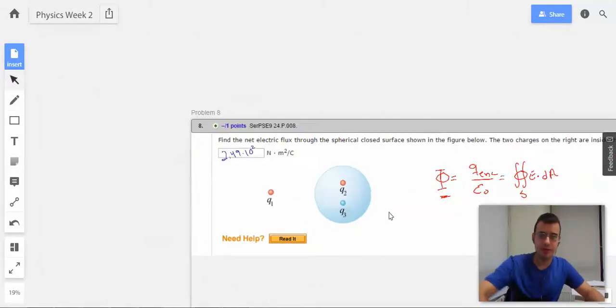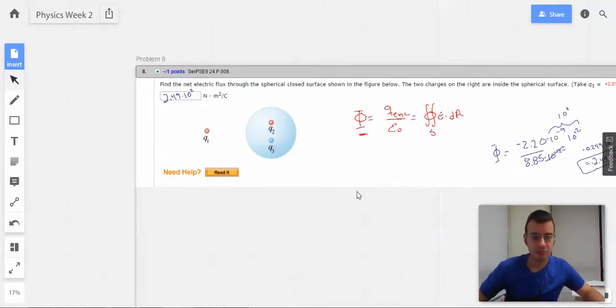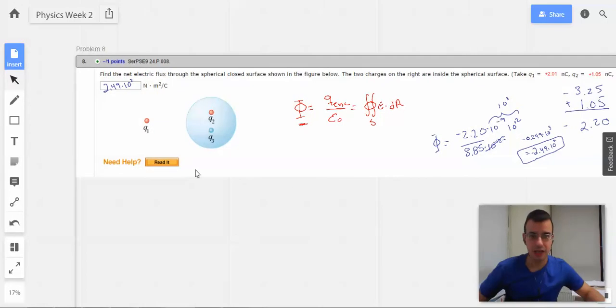Bam. And that's all that problem is. Yep. The key here is these two matter, they're Q enclosed, Q1 is not because it is not enclosed. All right. All right. On to number nine.